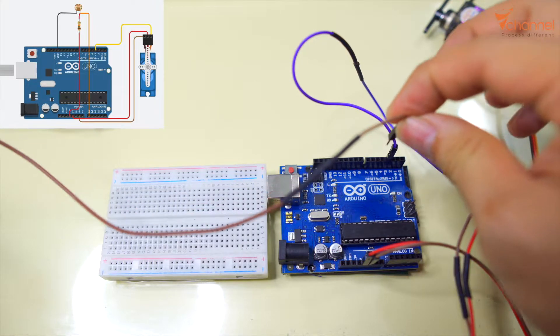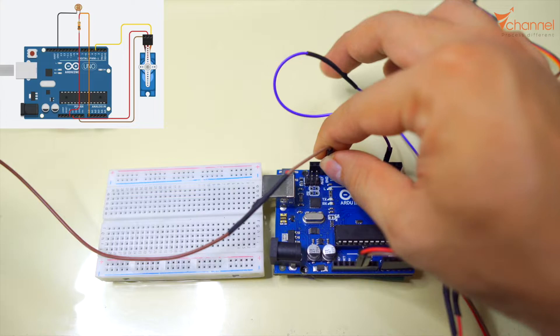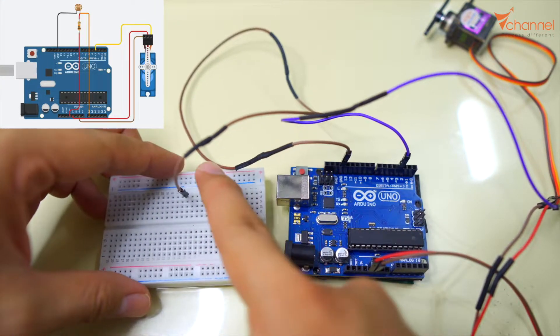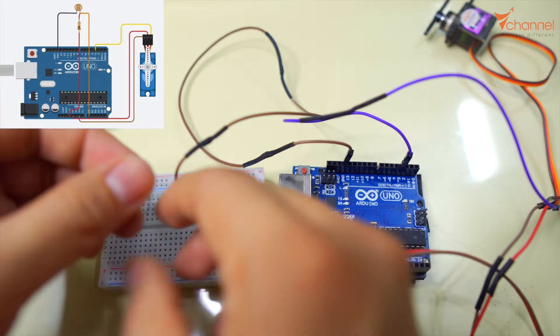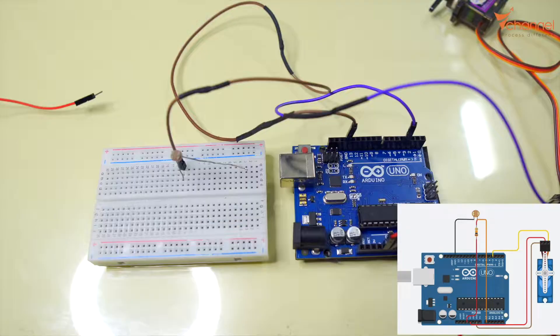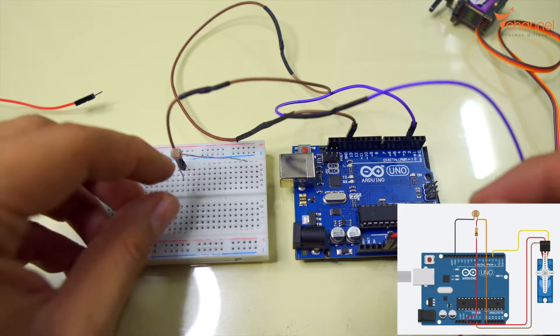Next, we connect photo resistor. First, the ground connects to photo resistor. The rest connects to resistor.